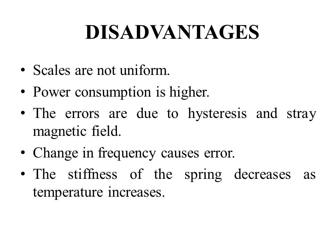The disadvantages of moving iron instruments are: compared to PMMC, the scales are not uniform; power consumption is very much higher for low voltage ranges; errors are caused due to hysteresis in the iron and due to stray magnetic fields; in AC measurements, changes in frequency cause serious errors; and with an increase in temperature, the stiffness of the spring also decreases.